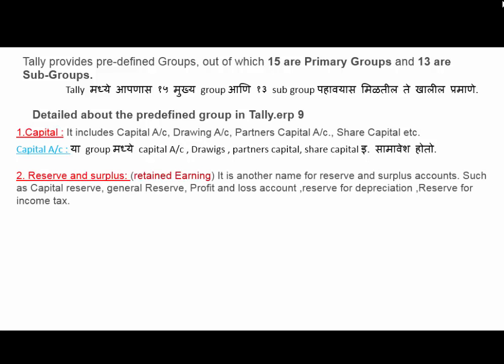Second is Reserves and Surplus. The subgroup is Retained Earnings, which is another name for reserve and surplus accounts, such as capital reserve, general reserve, profit and loss account, reserve for depreciation, and reserve for income tax.